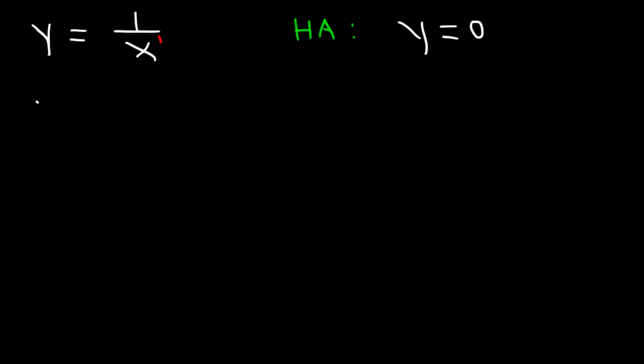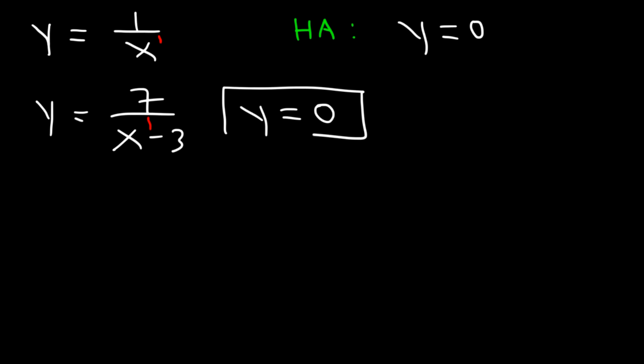Let's try this example: 7 over x minus 3. The degree of the denominator is 1, and the degree of the numerator is 0, so it's bottom-heavy. Therefore, the horizontal asymptote is y is equal to 0.